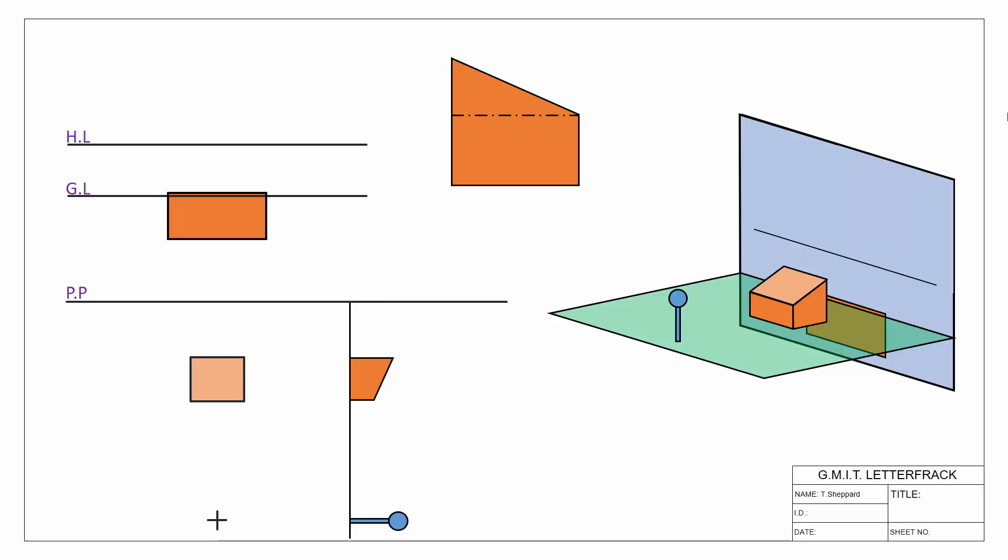What we're starting with is what an auxiliary vanishing point actually is. In its simplest form, an auxiliary vanishing point is a vanishing point that finds the vanishing point for a line that is sloped.